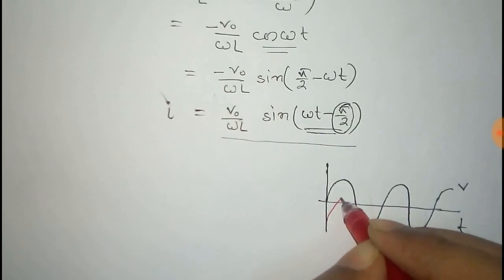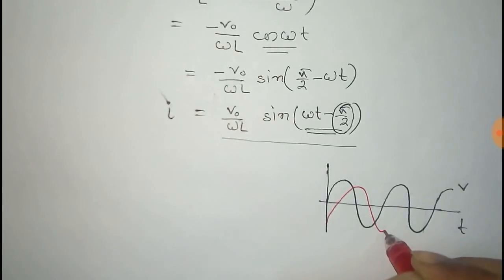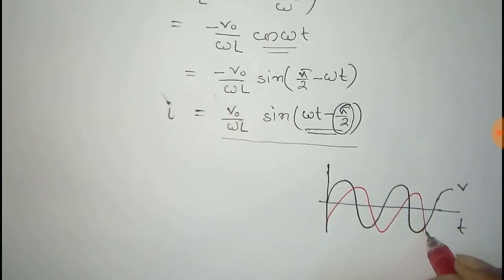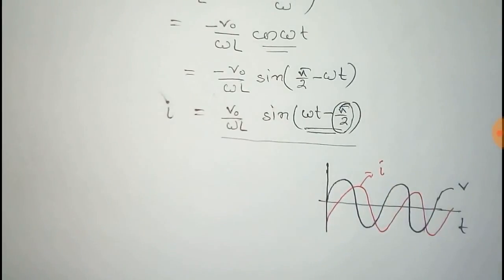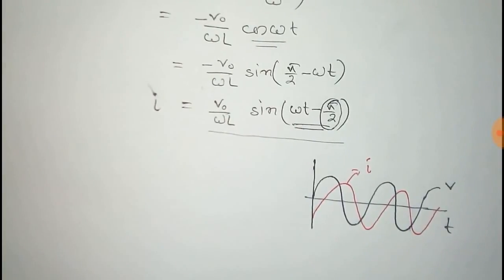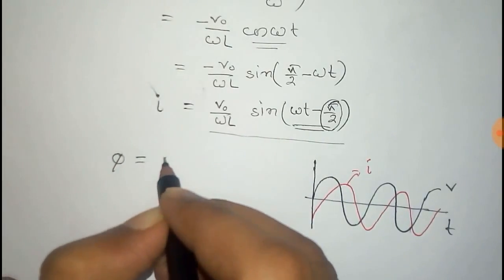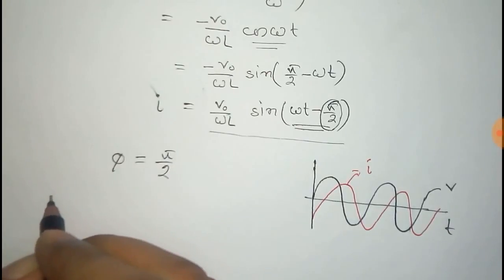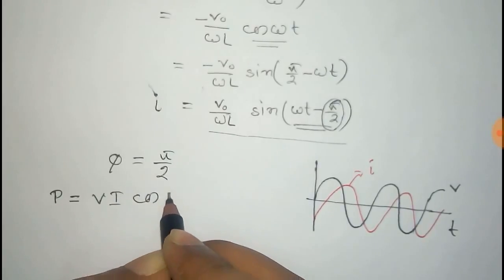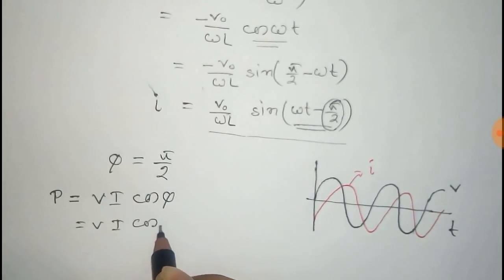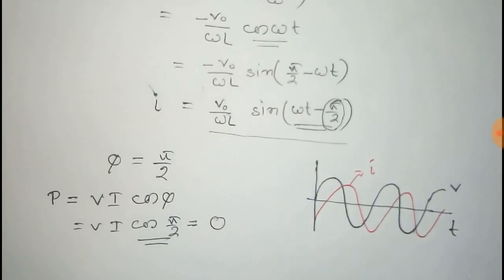The phase difference between voltage and current is 90 degrees, so phi equals 90 degrees or pi by 2. The power loss in this circuit is P equal to VI cos phi. Here cos(pi by 2) equals zero, so the total comes to zero. Thus we prove that the power loss in a pure inductor circuit is zero.